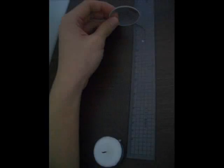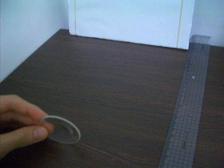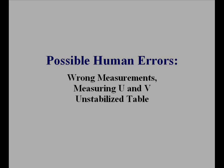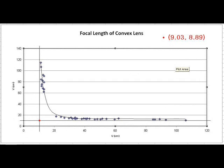In this experiment, U is the distance between the candle and the lens, and V is the distance between the lens and the screen. Moreover, it was hard to conduct the experiment because the room was too dark, as well as problems due to human errors. As this experiment was carried out by three amateur students, there are also other possible errors that might have happened during the experiment.